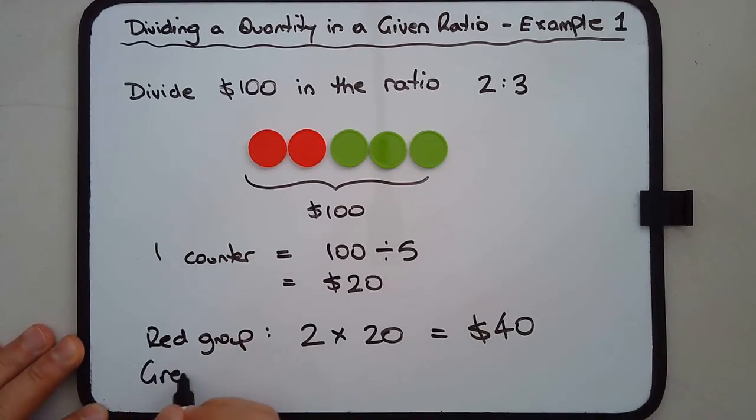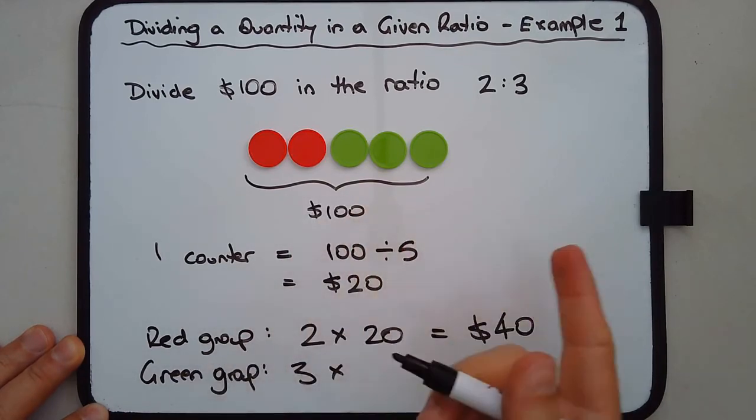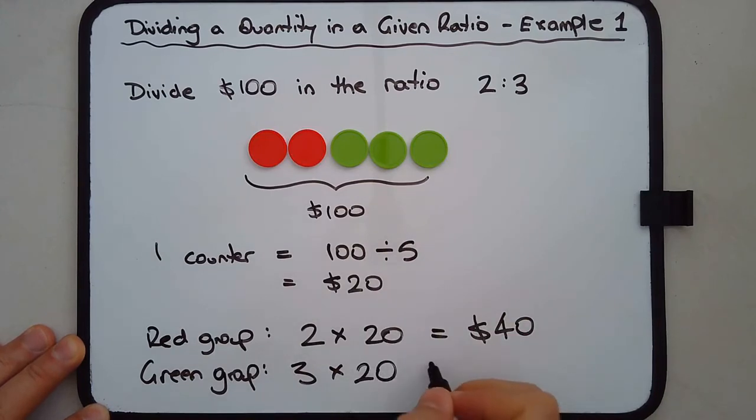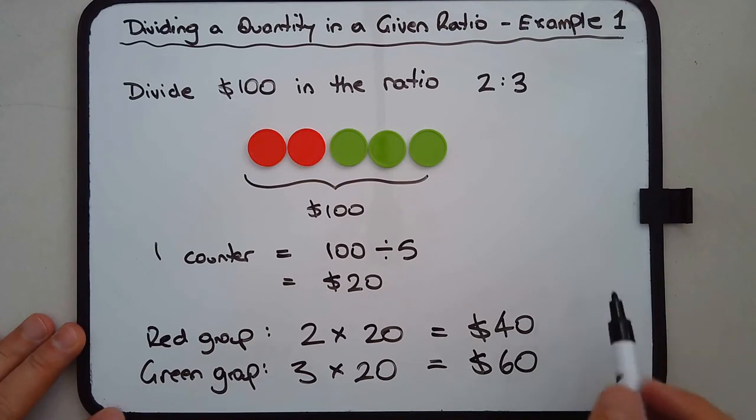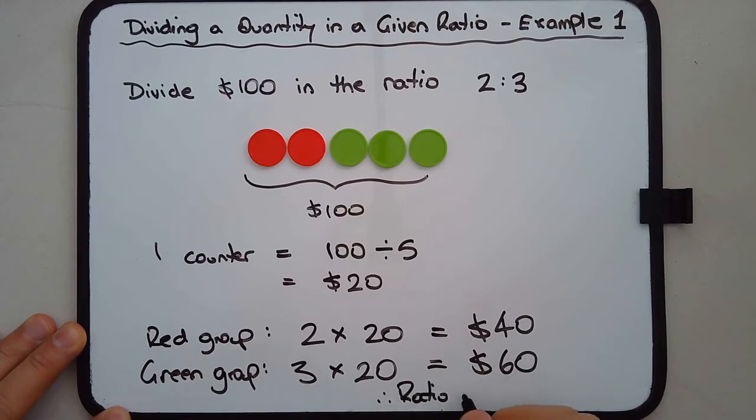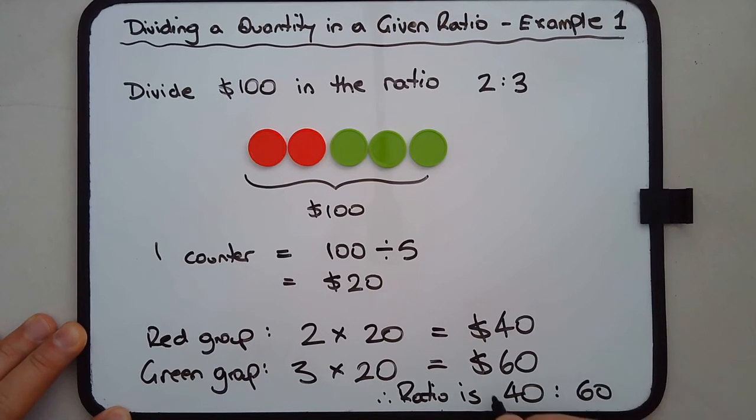The green group - we have three counters. Again, the counters are all worth the same, they're all worth $20, and that gives us $60. So the ratio is $40 and $60.